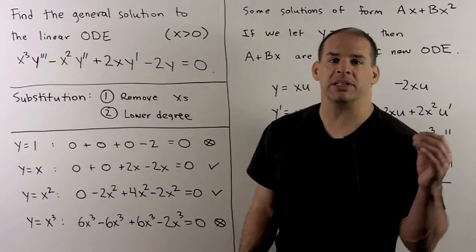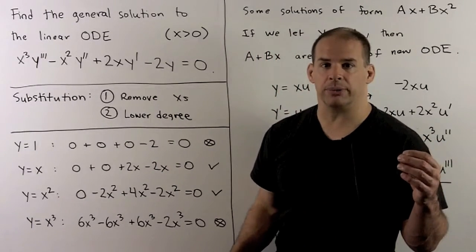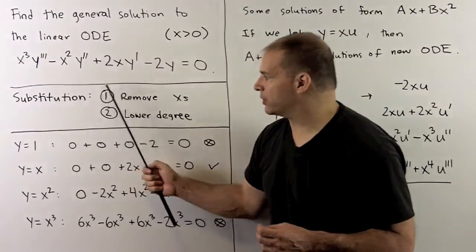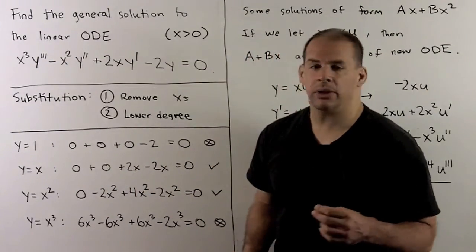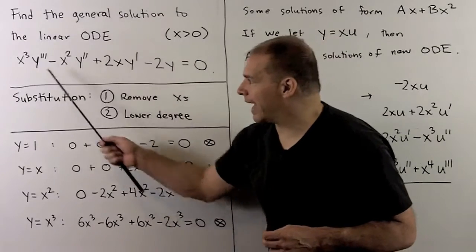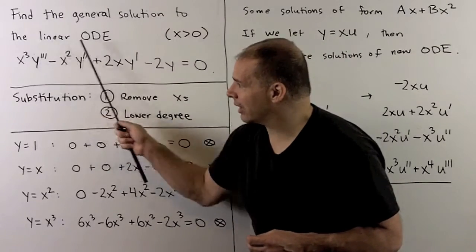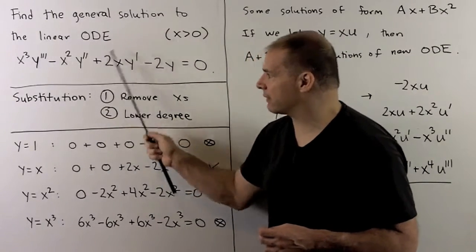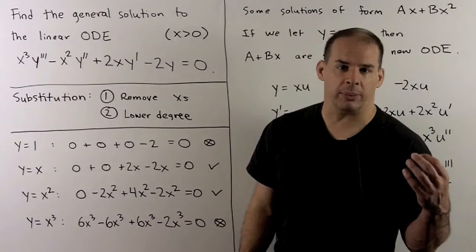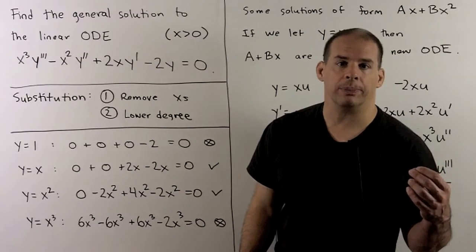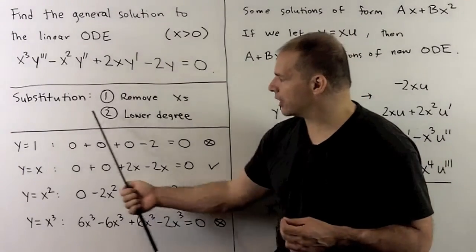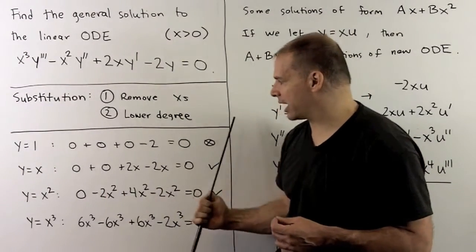Our technique is going to be substitution. The idea behind our substitution is either to do a substitution that will remove the X functions out in front, or it's going to lower the degree of the polynomial. So in this case, we're going to choose a substitution that does our second option.